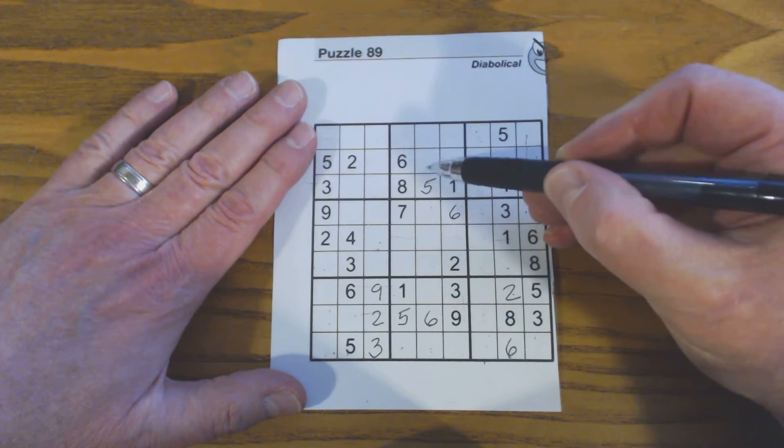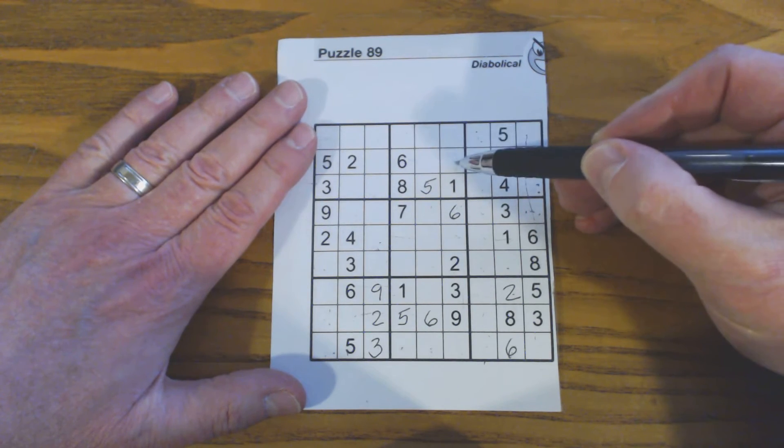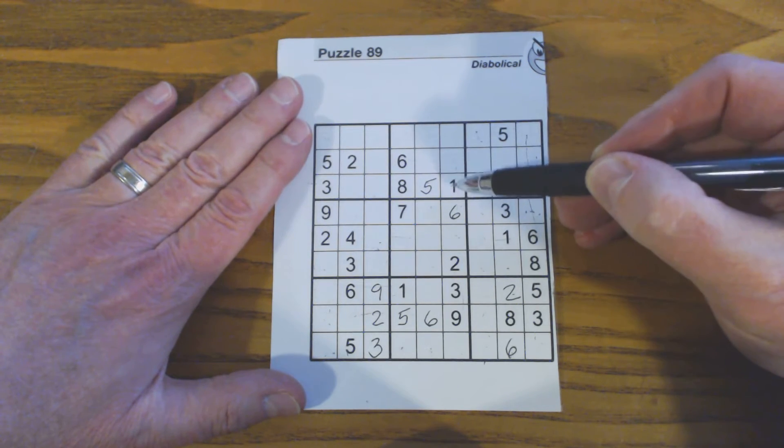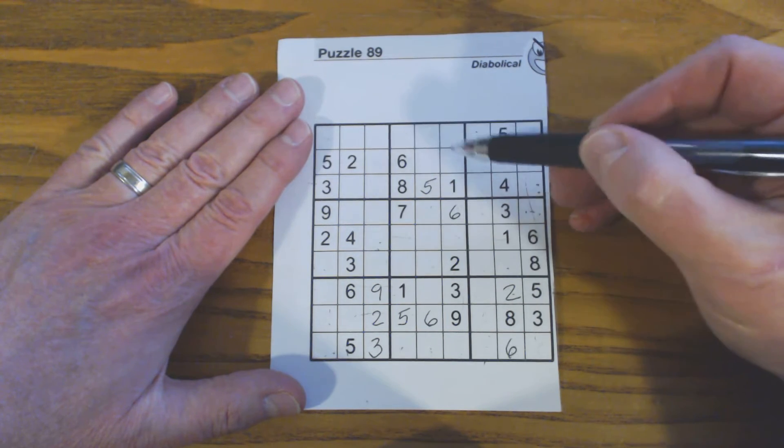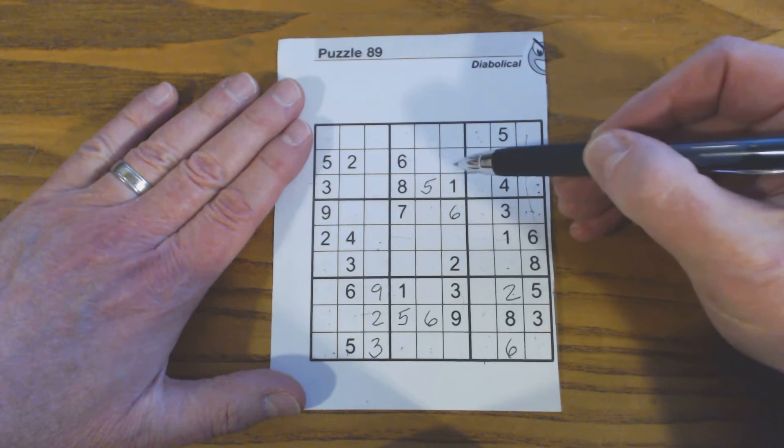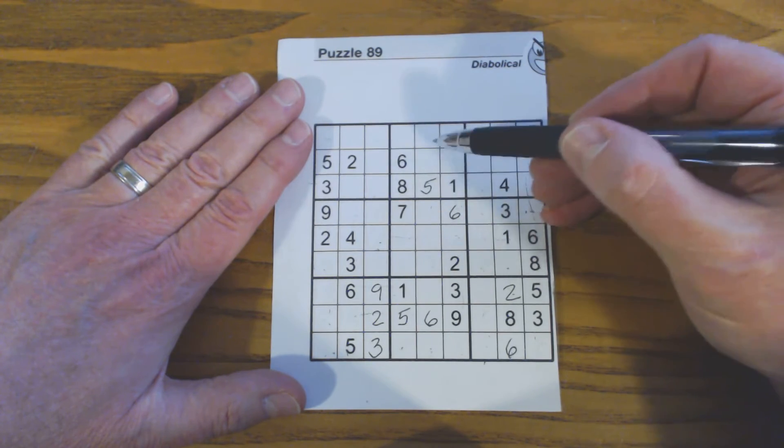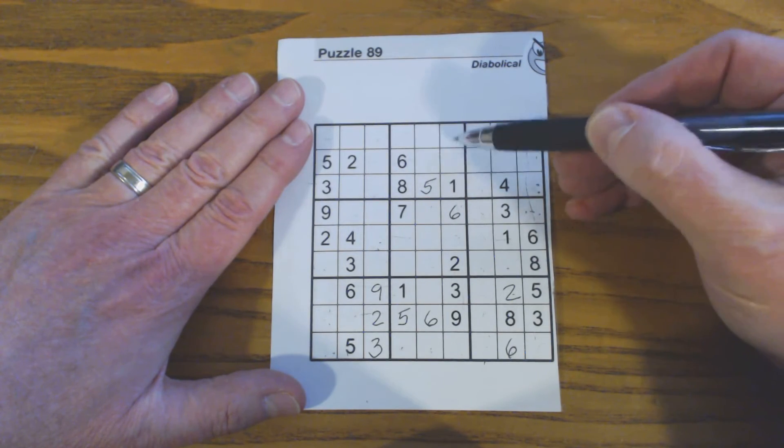Because we know that these are triplets, we know these are twins. So let's see what these numbers are. 1, 2, 3, 4, 5, 6, 7, 8, 9. So that's a 4 and a 7.